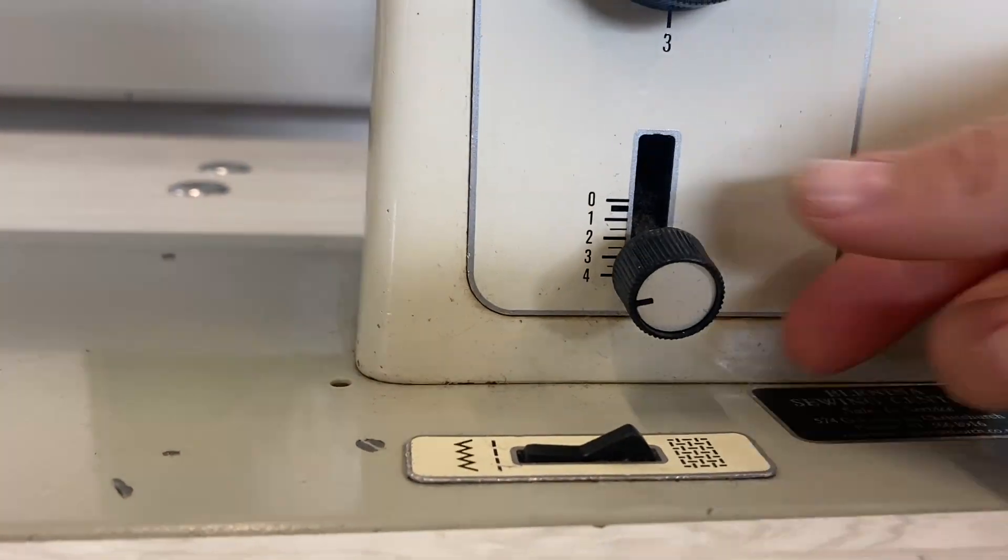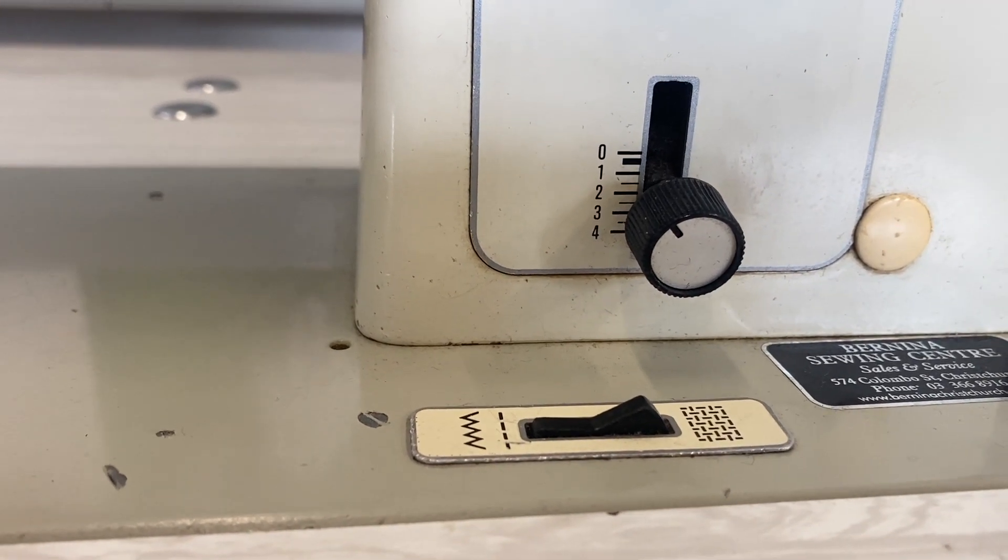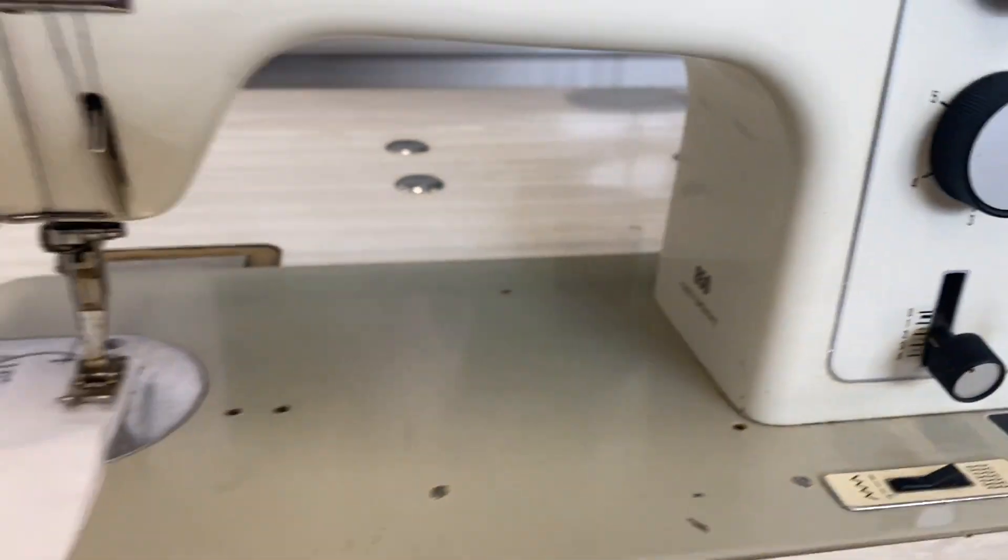But you turn the dial to adjust the stitch length. A normal stitch length would be about a three, which is where that is. It's really hard to show you in the video—about a three. That's just how long the stitch is. So when we start going...